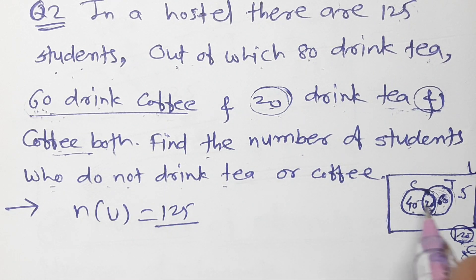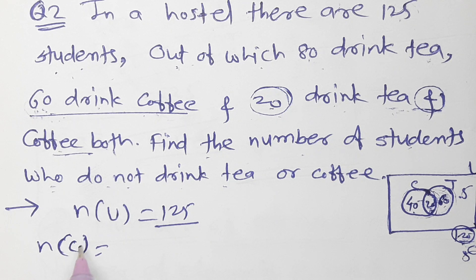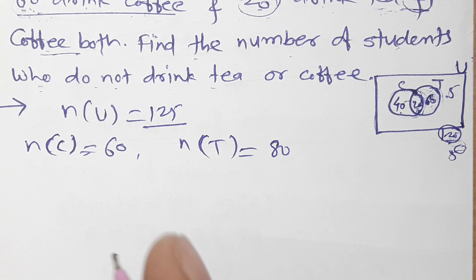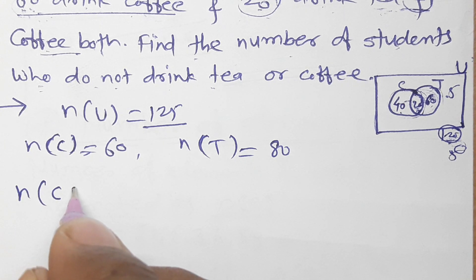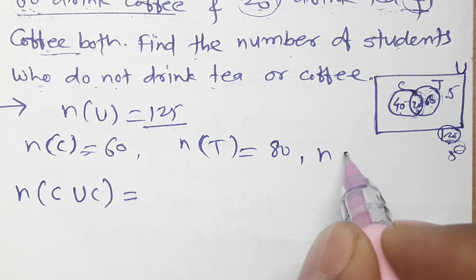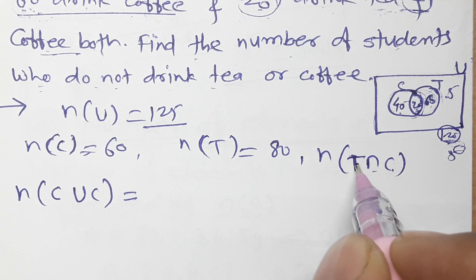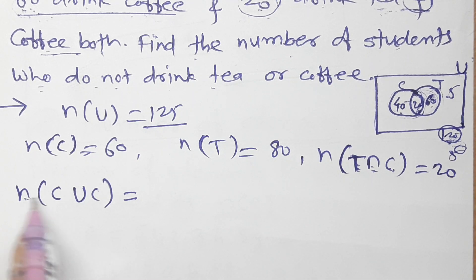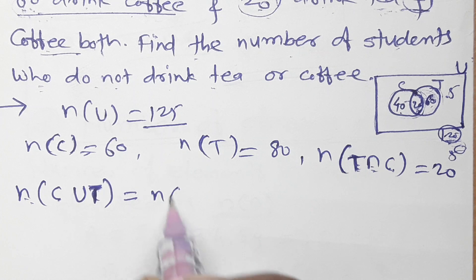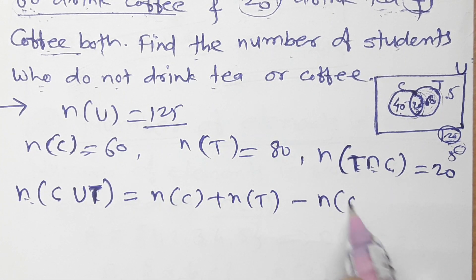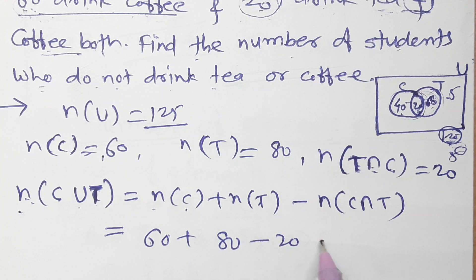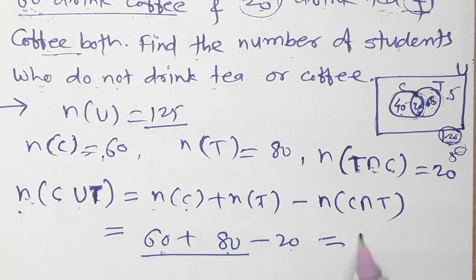Using the formula: number of universal set U = 125. Number of C (coffee) = 60, number of T (tea) = 80, number of C intersection T = 20. Number of C union T = number of C plus number of T minus number of C intersection T = 60 + 80 minus 20 = 140 minus 20 = 120.